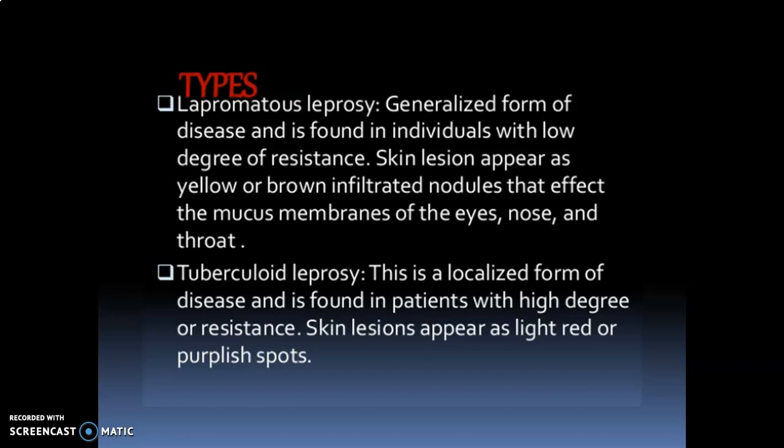Types of Leprosy. There are many types of Leprosy. Number one is Lepromatous Leprosy. This is a generalized form of disease and is found in individuals with a low degree of resistance. Skin lesions appear as yellow or brown infiltrated nodules that affect the mucous membrane of the eye, nose, and throat.